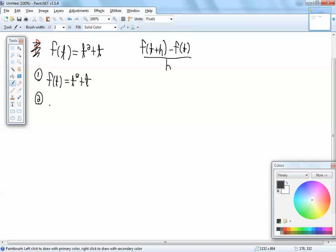Second step is we want to find F of T plus H. Which means we're going to go back to our original function, and everywhere we have a T, we'll put in a parentheses. Now, whatever is inside the parentheses right here is automatically what you put in here and here. So we'll put T plus H here, and we'll put T plus H here.